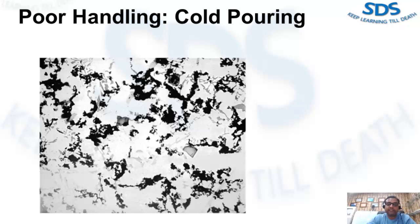Cold pouring: this image is an example of the result of pouring cold metal and using excessive lube in the shot sleeve. The alloying elements have separated and the graphite lube is mixed into the metal. The metal was so cold that it would not flow properly into the die cavity, and the operator kept increasing the amount of lube to get the metal flowing.